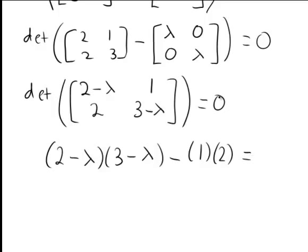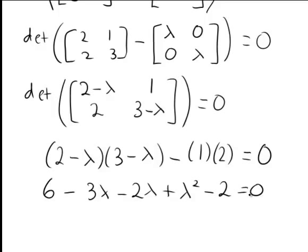Expanding these brackets, we have 6 - 3λ - 2λ + λ² - 2 = 0, which is just a quadratic. Collecting like terms and simplifying, we are solving λ² - 5λ + 4 = 0.